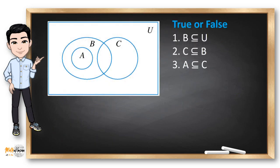Now, how about we use a Venn diagram? In this given, is B a subset of universal set U? Of course, because all the elements of B are inside the universal set U — the circle B is inside U. So this is true.